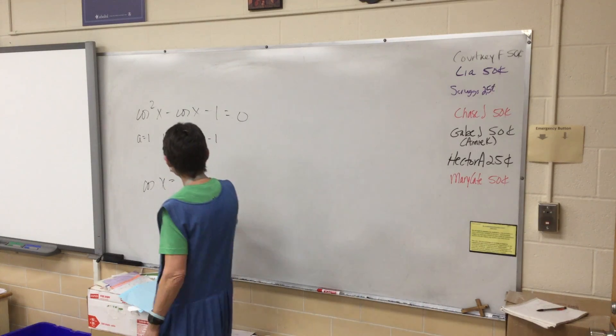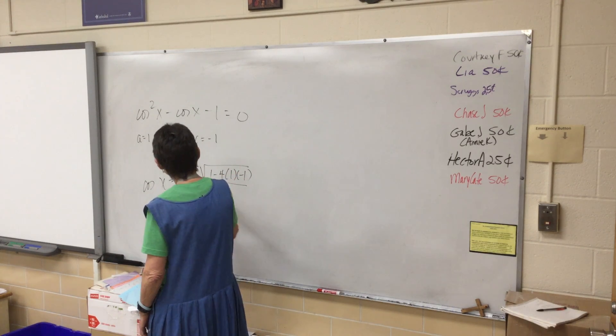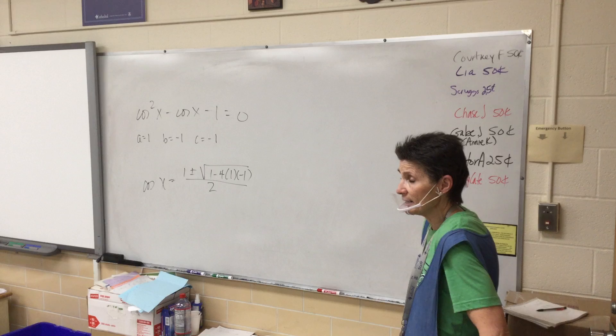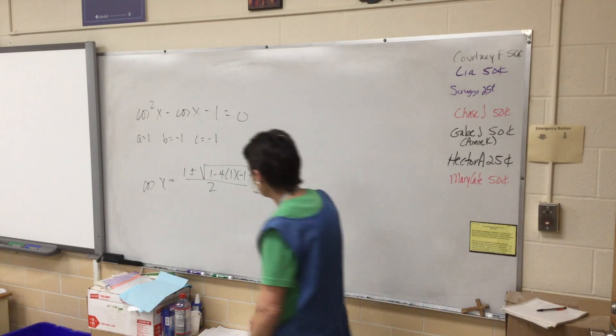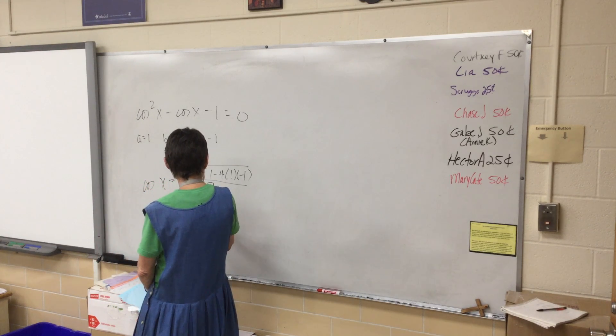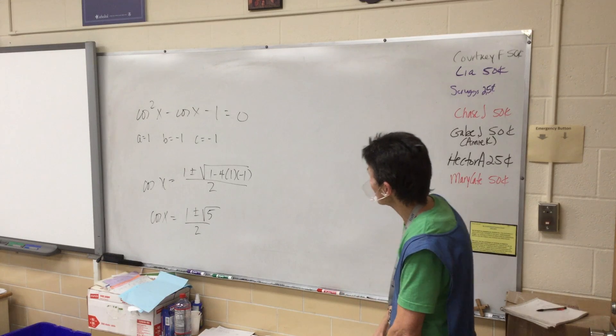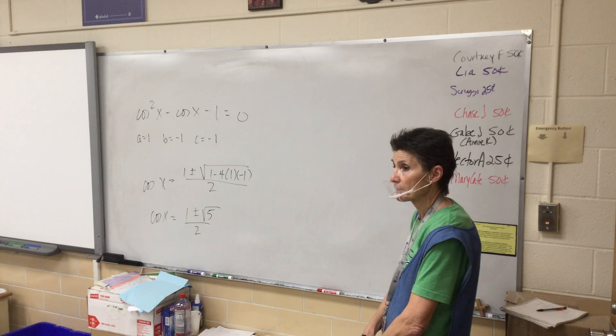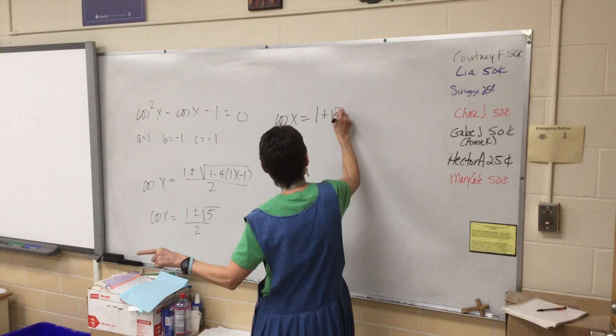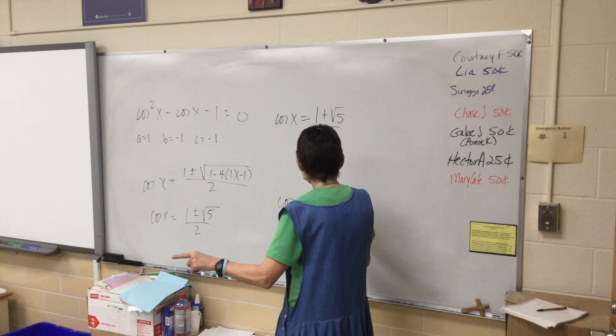So cosine x equals negative b plus or minus the square root of b squared minus 4ac all over 2a. Now clearly I'm going to need a calculator to help me with this problem. That's fine. Let's clean that up. So cosine x equals 1 plus or minus the square root of 5 over 2. That's two answers.